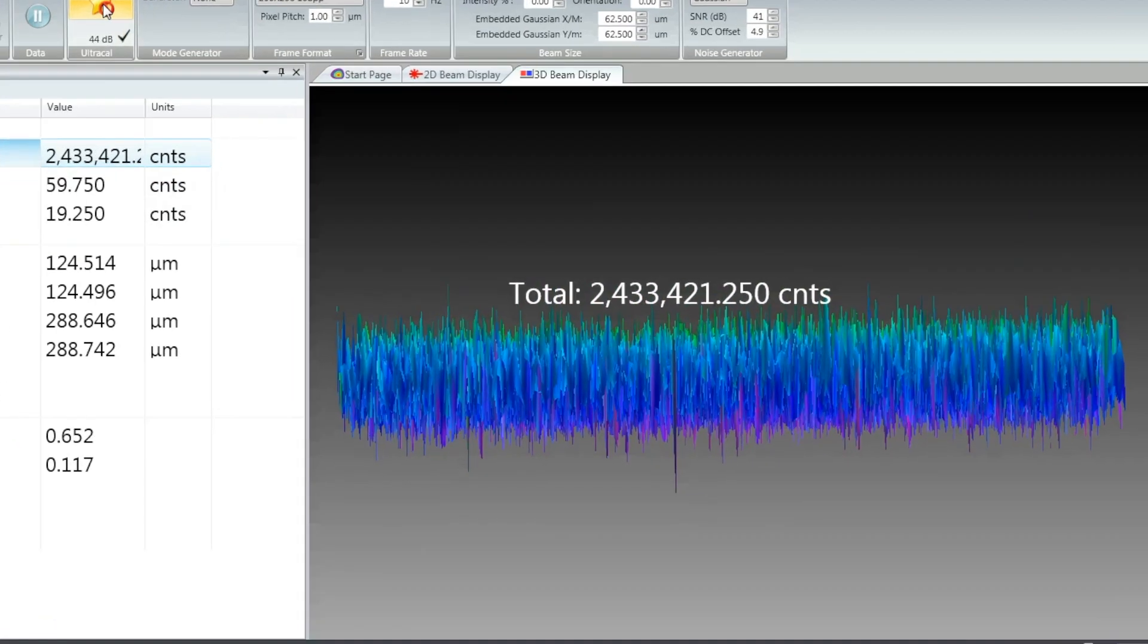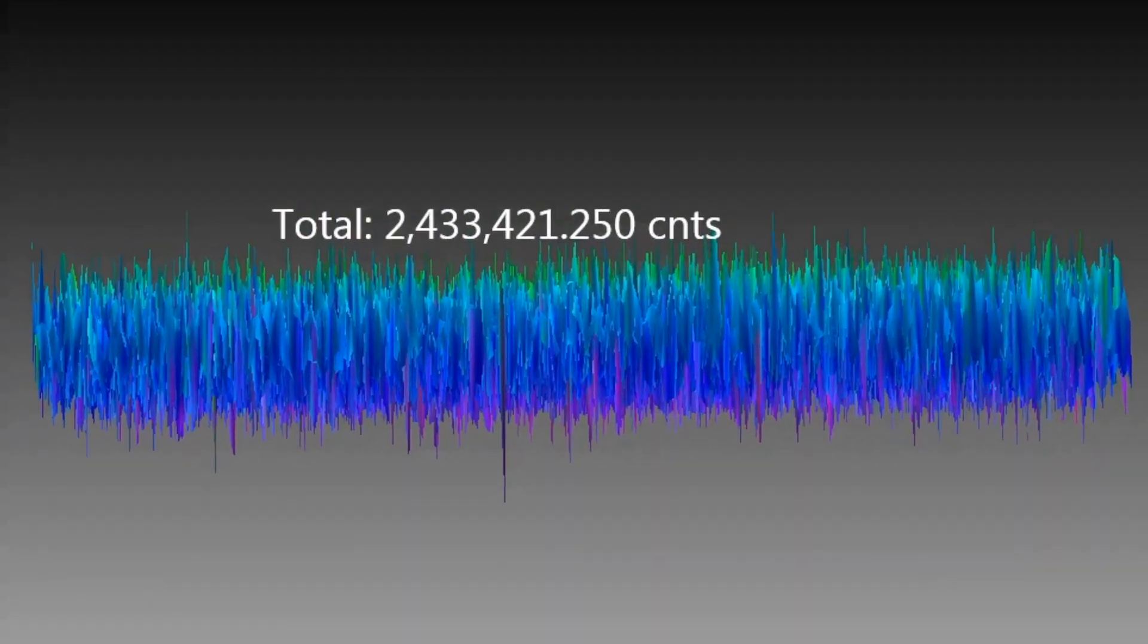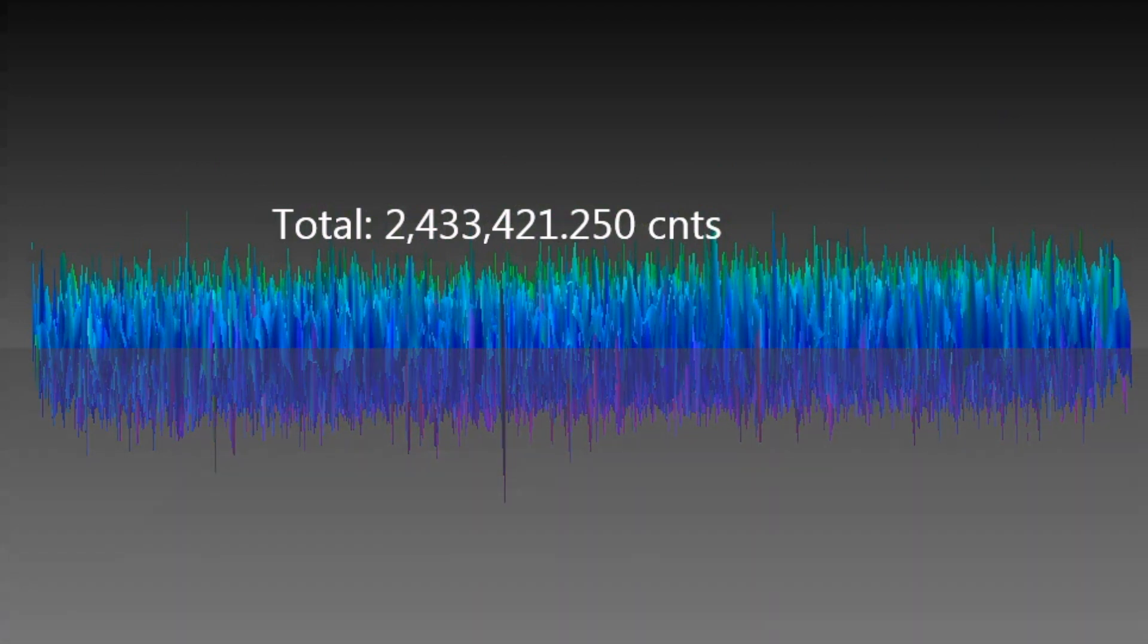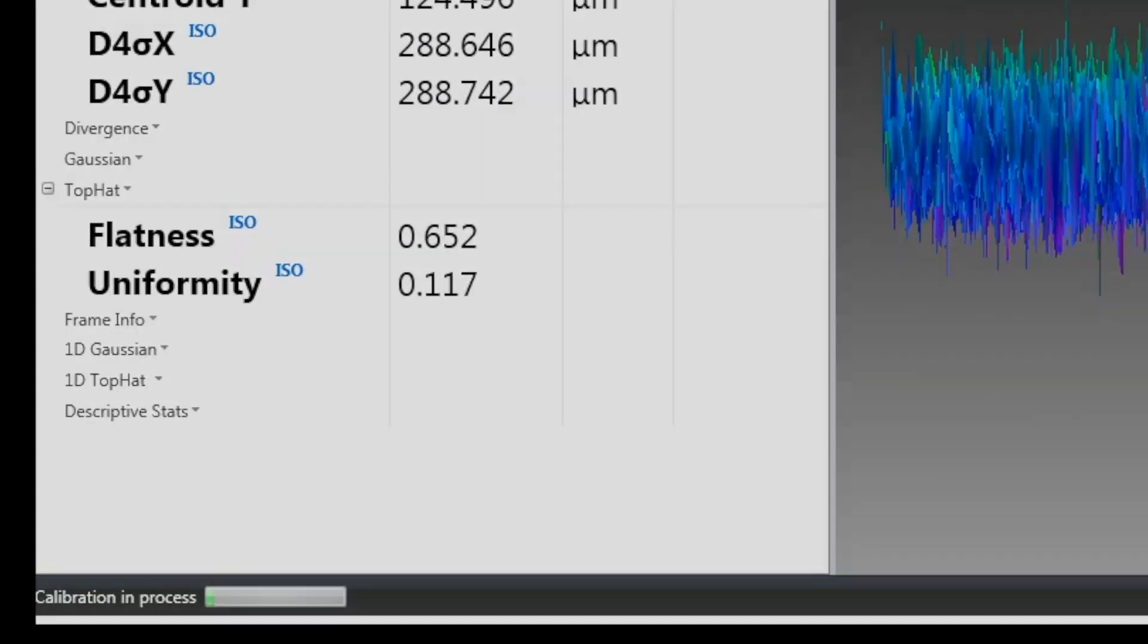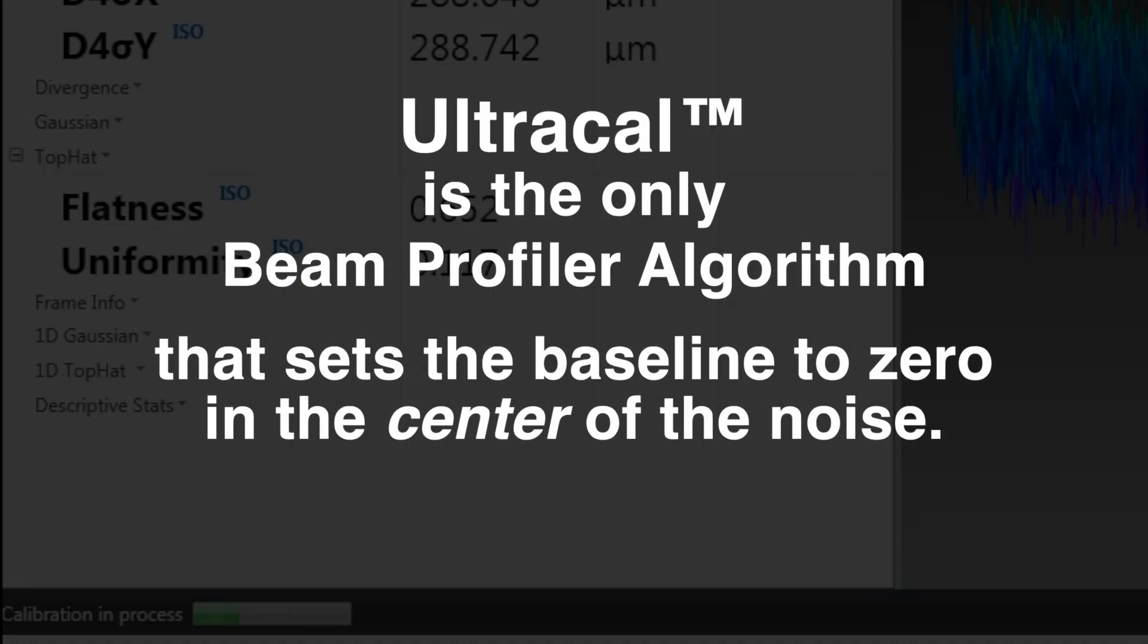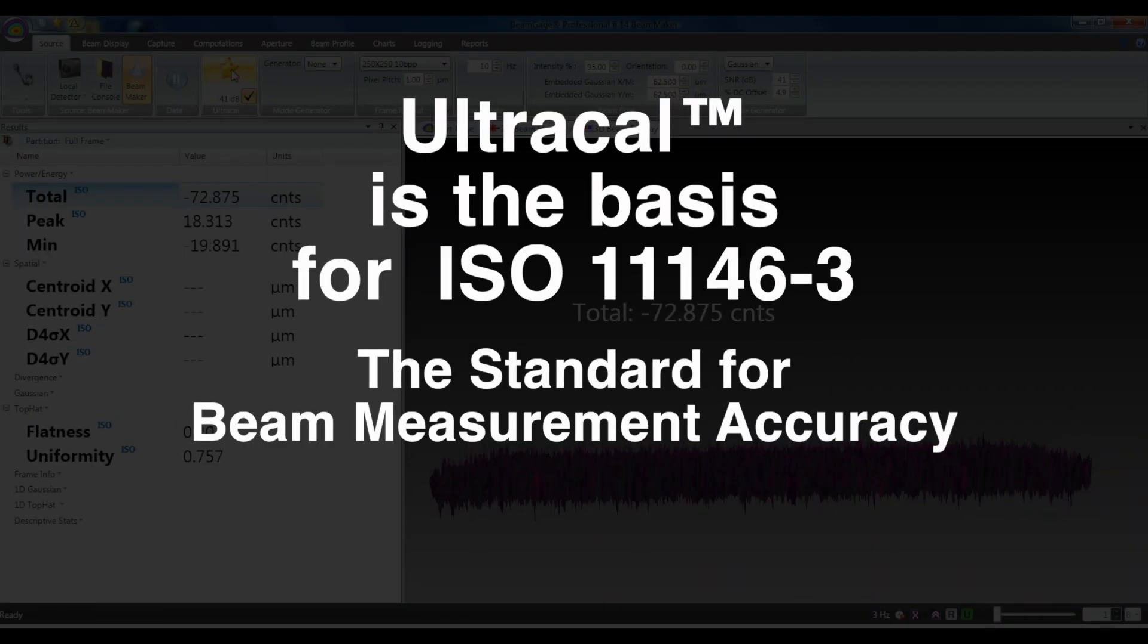Other beam profiling products use less sophisticated algorithms that perform a baseline subtraction, but truncate the noise below the zero of the baseline. This leaves only a positive component, which adds a net value to all beam measurements. UltraCal is the only beam profiler algorithm that sets the baseline to zero and in the center of the noise. It is no surprise that Spiricon's UltraCal helped establish the ISO 11146-3 standard for beam measurement accuracy.